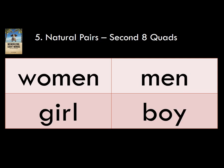Women were once girls, and men were once boys. So the quad is: women, men, girl, boy.